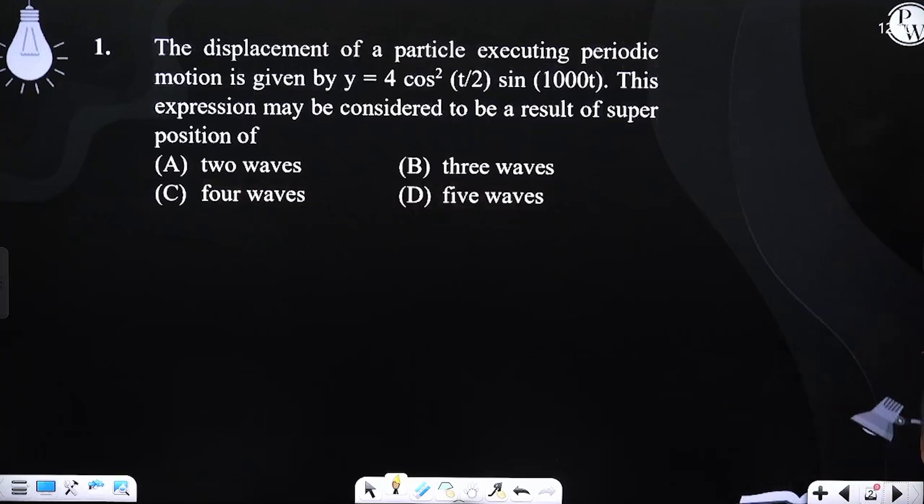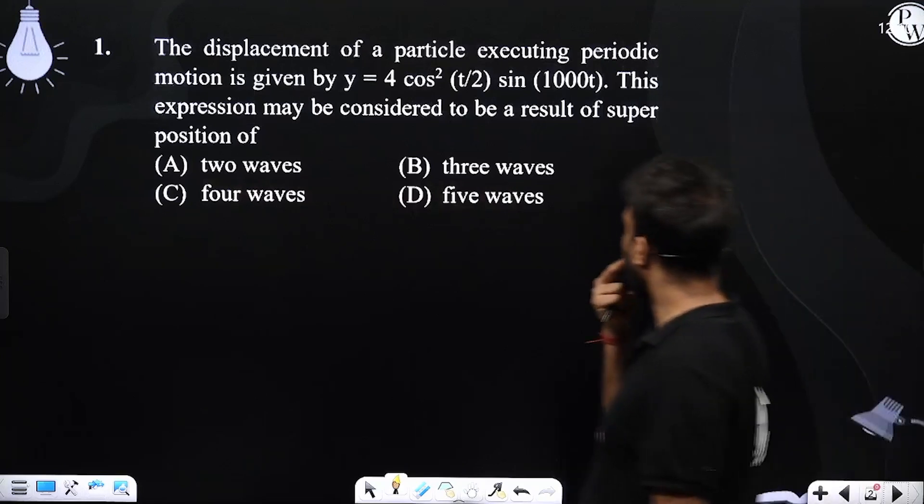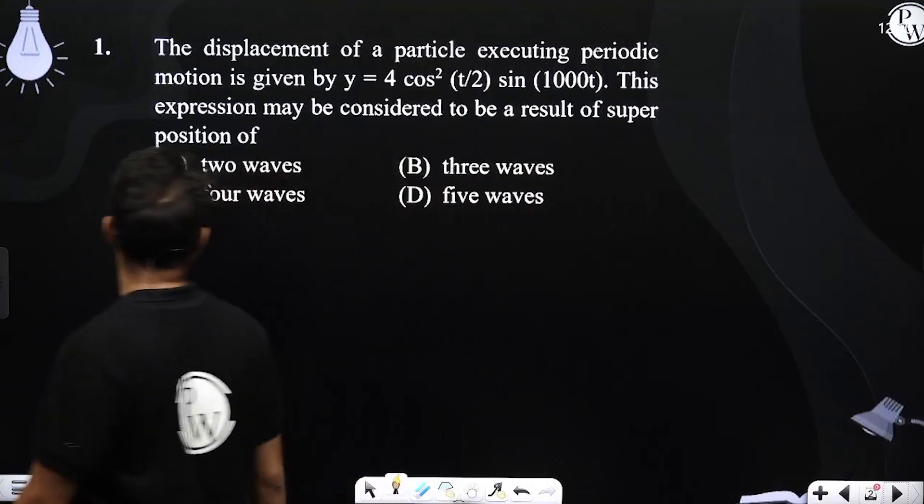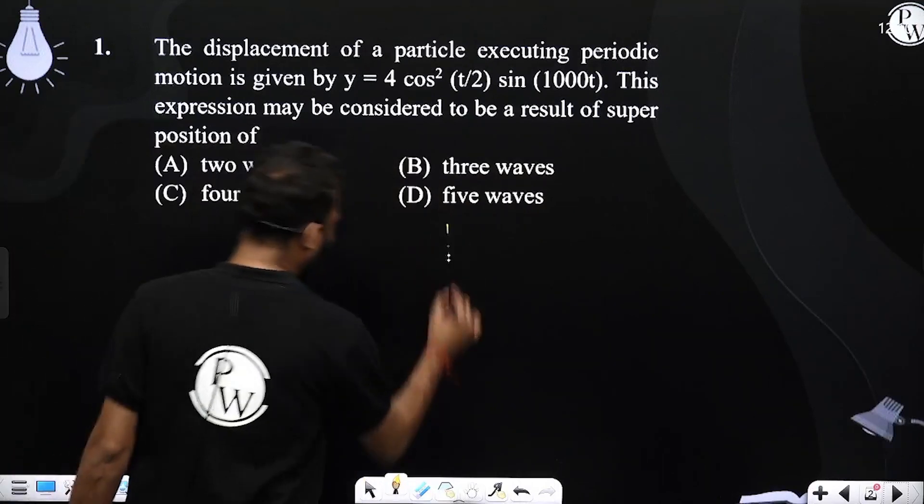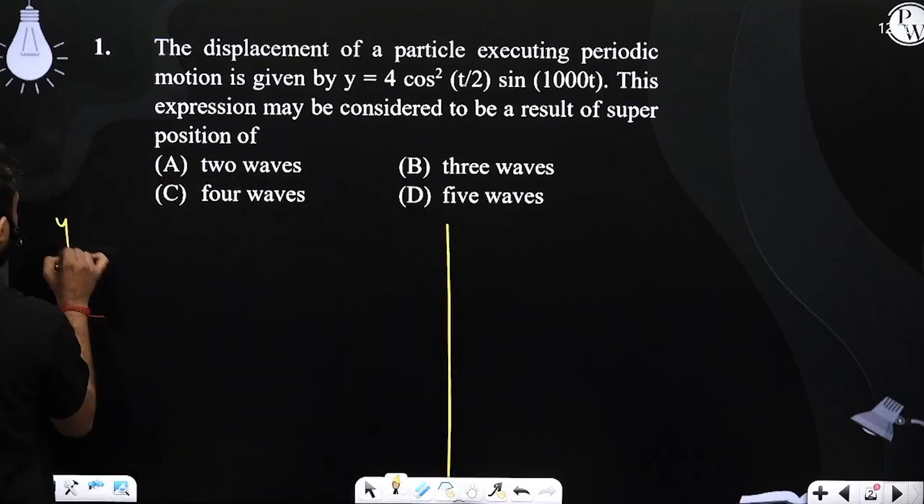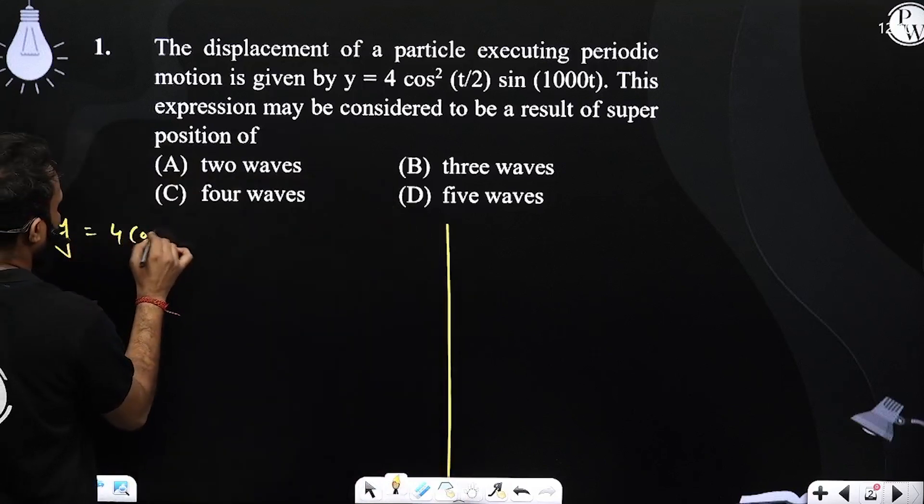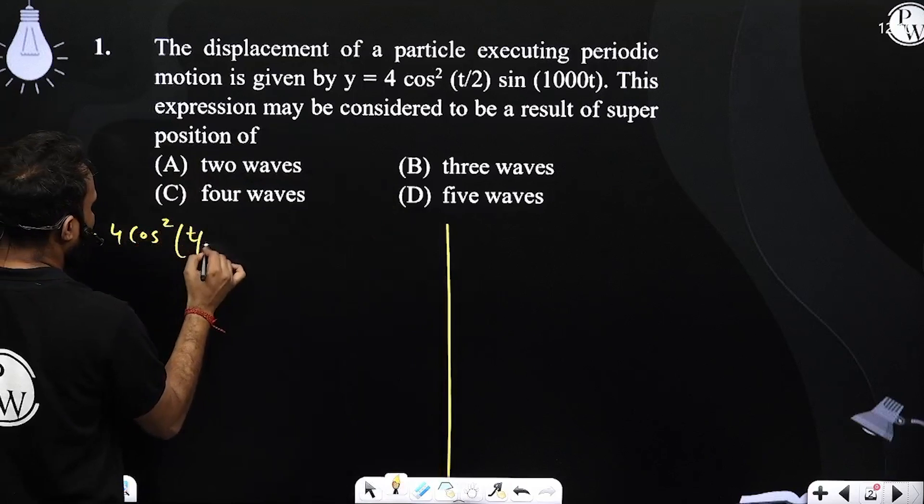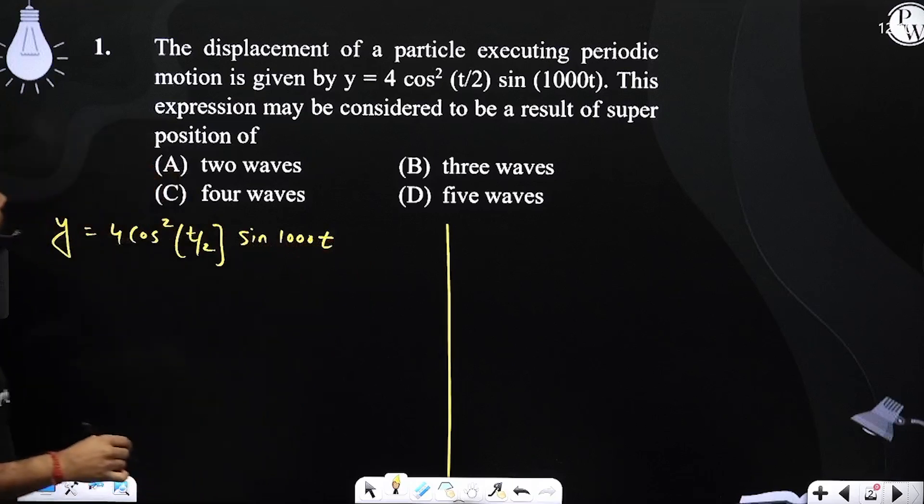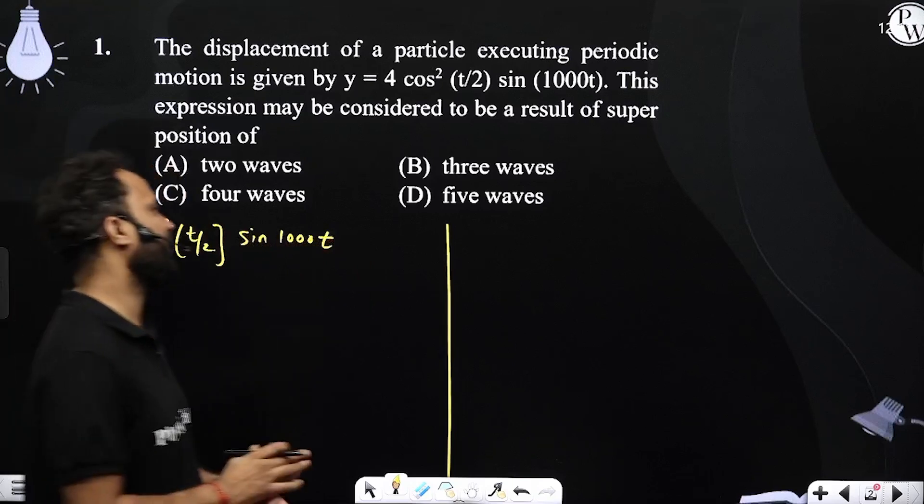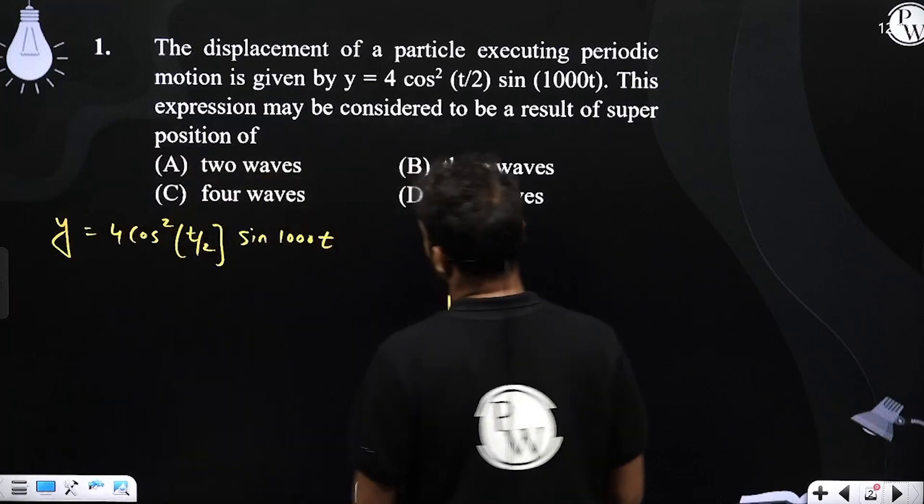Question number one is saying: the displacement of a particle executing periodic motion is given by y equals 4 cos square t by 2 sin 1000t. This expression may be considered as a result of superposition of how many SHMs?